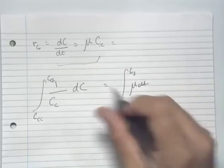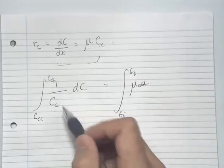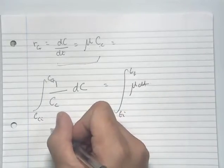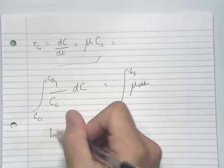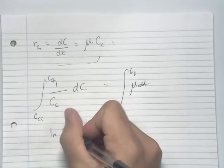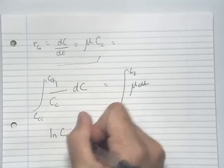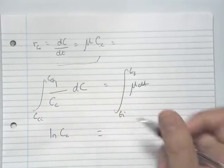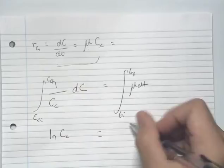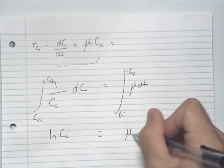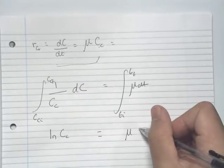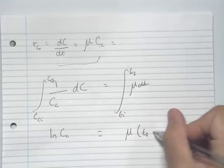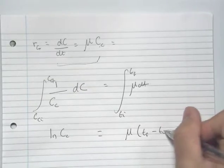Integrating the left hand side, we get ln of c, and on the right hand side we get mu times (t_final minus t_initial).